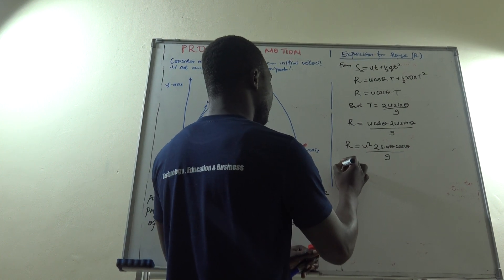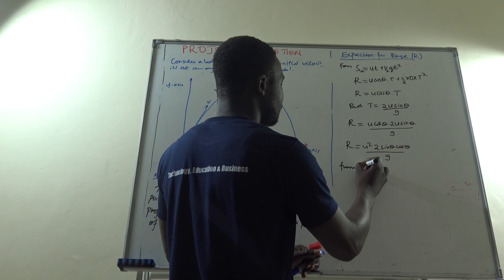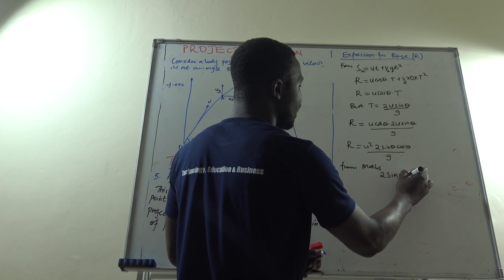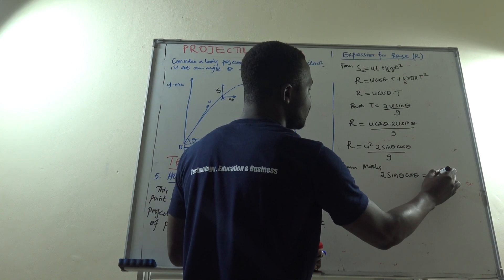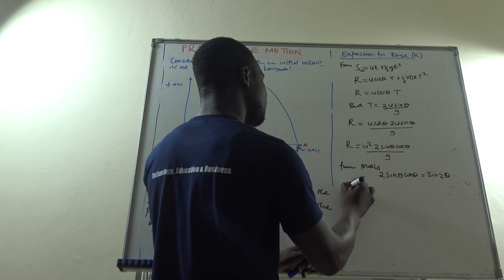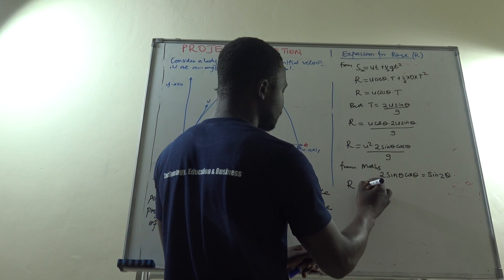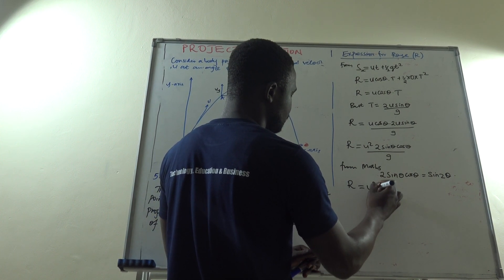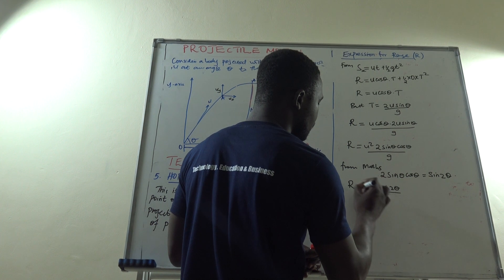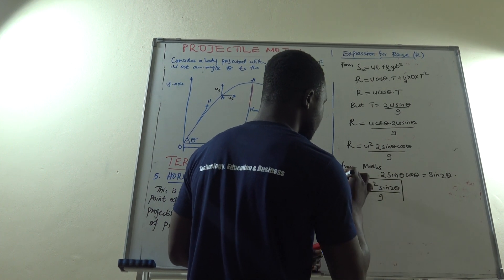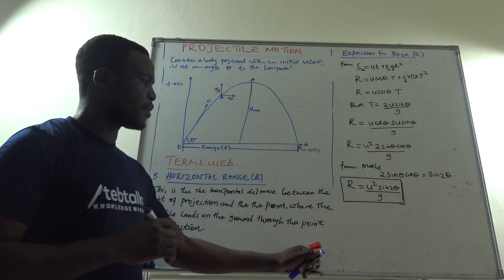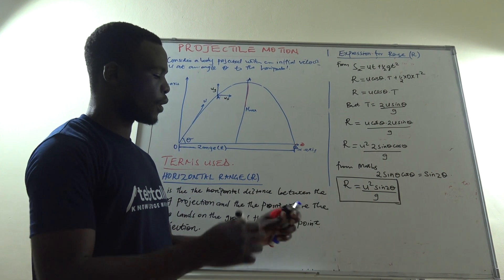Let us rearrange: U times U becomes U squared, then 2 sinθ cosθ divided by G. From trigonometry we know that 2 sinθ cosθ is equal to sin 2θ. So this tells us that our horizontal range R is equal to U squared sin 2θ divided by G. This is the expression for horizontal range.